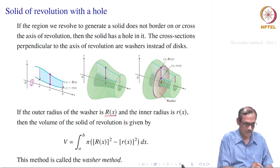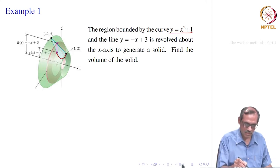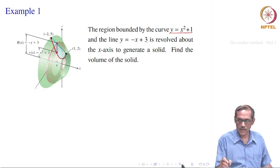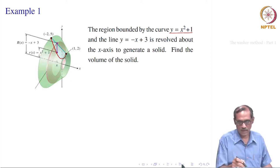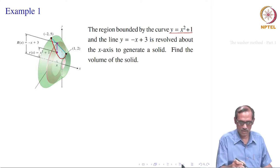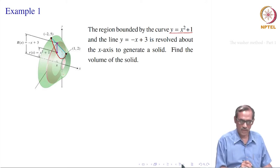Let us apply the washer method on an example. The region is bounded by the curve y = x² + 1, which is a parabola, and the line y = −x + 3. They form a bounded region and this region is revolved about the x-axis. We want to find the volume of the solid. We must first find the outer radius capital R(x), the inner radius small r(x), and the limits of integration, which come from the intersection points of the two curves.